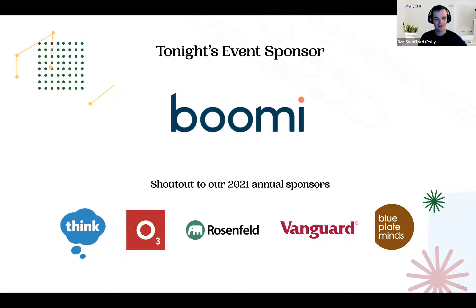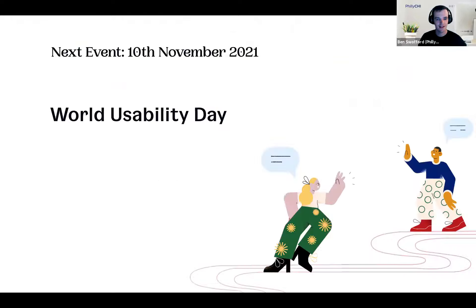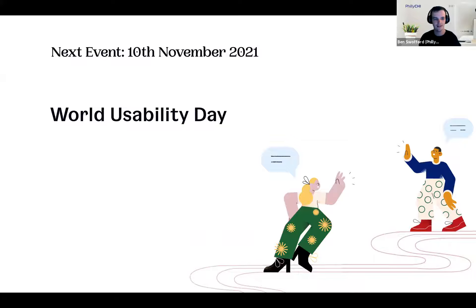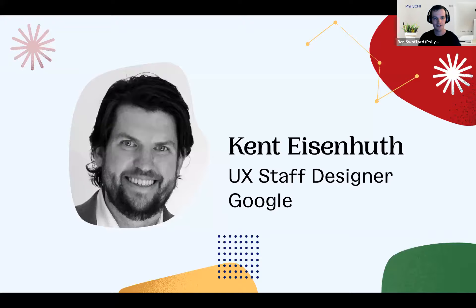We're noticing some of our Slack messages are coming through — sorry about that, we'll try to fix that for next time. Our next event: Philly Chi hosts an event about every month. November is World Usability Day, which Philly Chi is proud to host locally — that'll be coming up mid-November. This is also a call-for-submissions event, so we'll be putting out the call to the community for talk submissions.